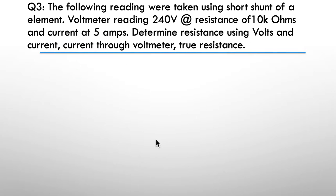Moving on, question three: The following readings were taken using a short shunt of an element—that's a heating type element. The voltmeter reading was 240 volts at a resistance of 10k ohms and a current of 5 amps.